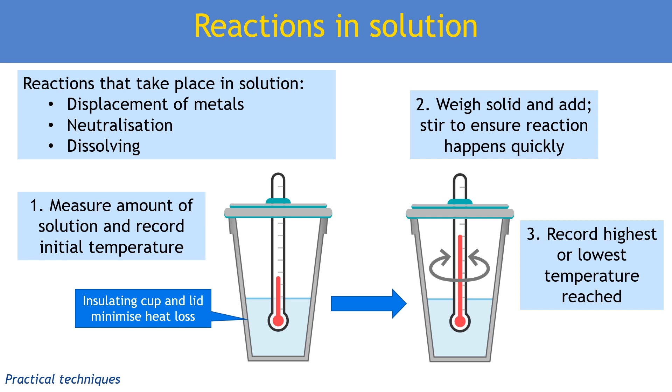We would record the highest or lowest temperature reached depending on if it's exothermic or endothermic. Then we can work out our moles because we weighed our solid or calculated something about the solution. We've got an initial and final temperature to give us delta T, and we know the amount of solution or mass of water from the polystyrene cup. From that we can work out a final value in kilojoules per mole.